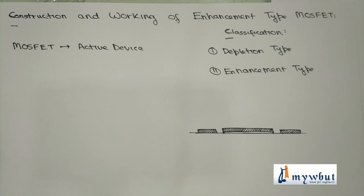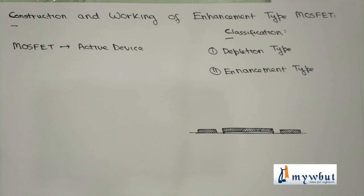We will be doing the second type of field effect transistor, that is MOSFET. MOSFET stands for Metal Oxide Semiconductor Field Effect Transistor. There are two types of MOSFET: enhancement type and depletion type.